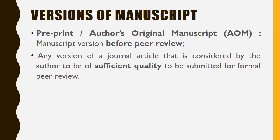Before we understand open access further, we need knowledge regarding the versions of a manuscript, which will help you clearly understand at what stage articles are made open access. The first is the preprint or author's original manuscript — as the name suggests, it is the manuscript version before peer review. The author considers this version to be of sufficient quality to be submitted to a journal for peer review.